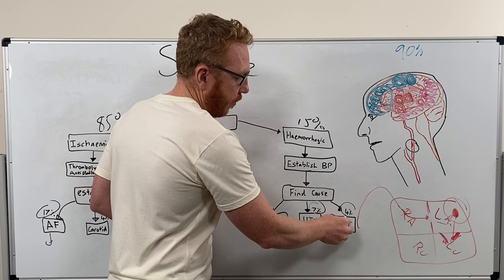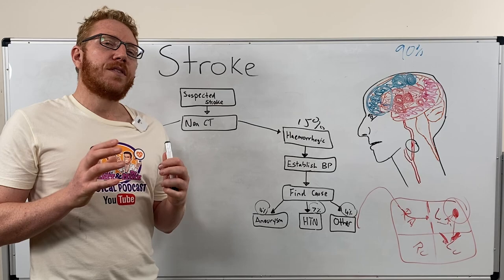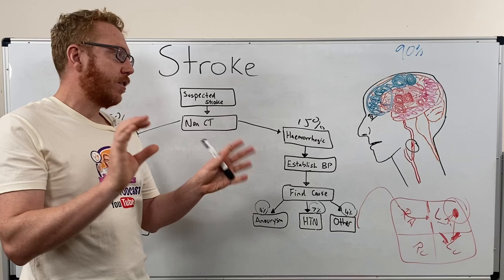So hopefully now you've got the definition of what a stroke is, you know the two different types — ischemic and haemorrhagic — you know the risk factors associated with each, you know how to diagnose stroke, and you know how to treat it.